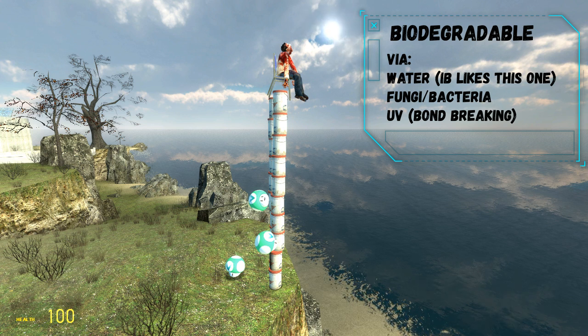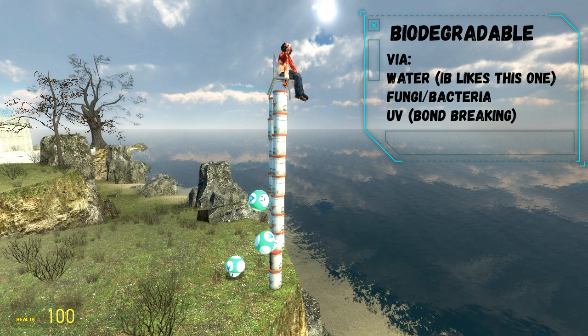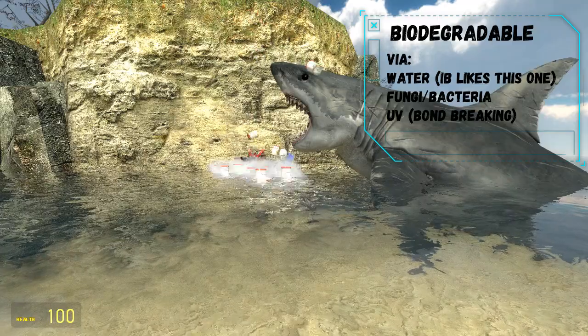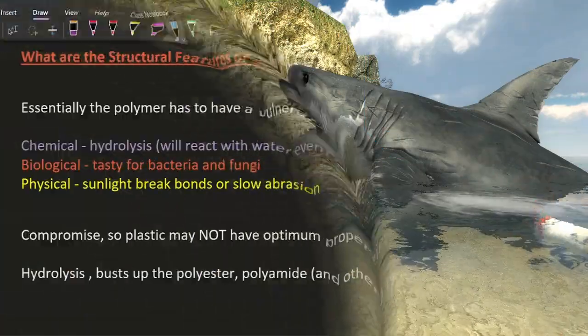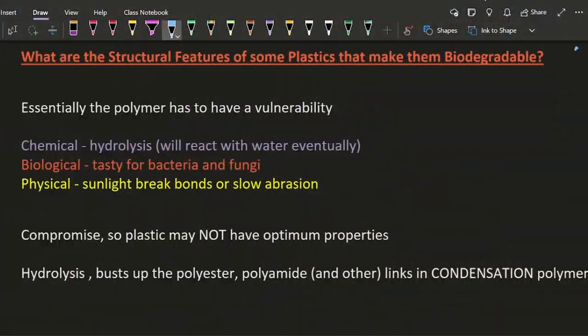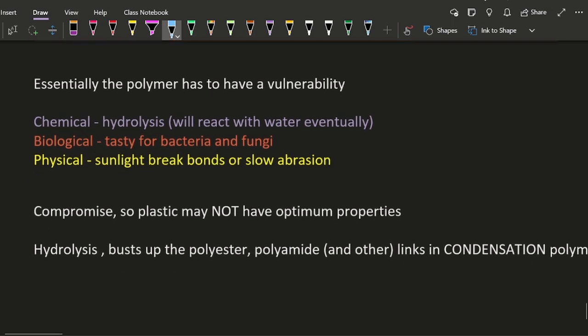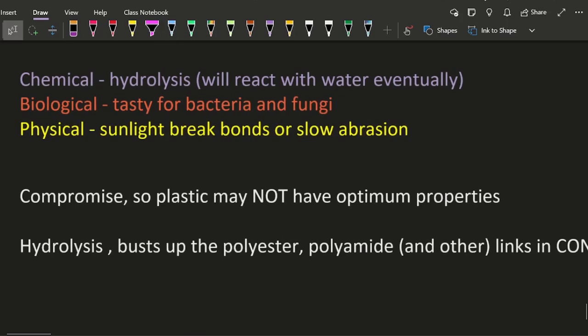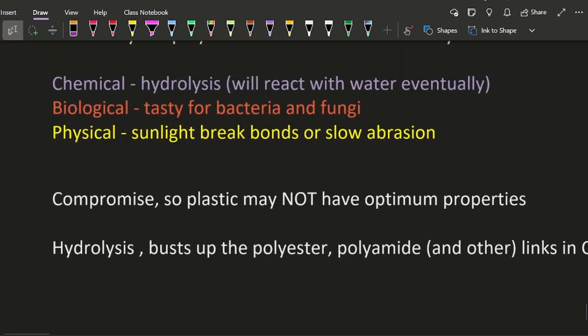Essentially, these polymers or plastics have to have a vulnerability. In chemistry, it's hydrolysis, which means they'll react with water eventually - that might take a while. Biological - they could be tasty for some bacteria or fungi to eat. Or physical - sunlight has enough energy to break some chemical bonds, especially ultraviolet light with higher energy, or slow abrasion, which is, for example, a bottle just being constantly smashed against the seashore by the waves.